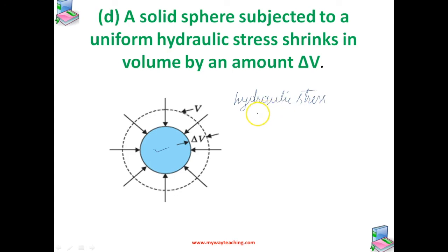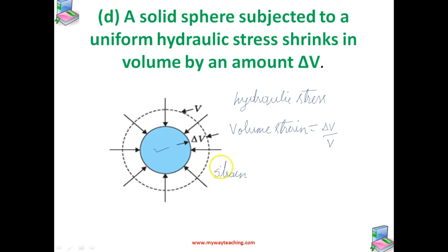The strain produced by hydraulic pressure is called volume strain, which is equal to the ratio of change in volume to the original volume. In general, strain is the ratio of change in dimension to the original dimension, so it has no units and no dimensional formula.